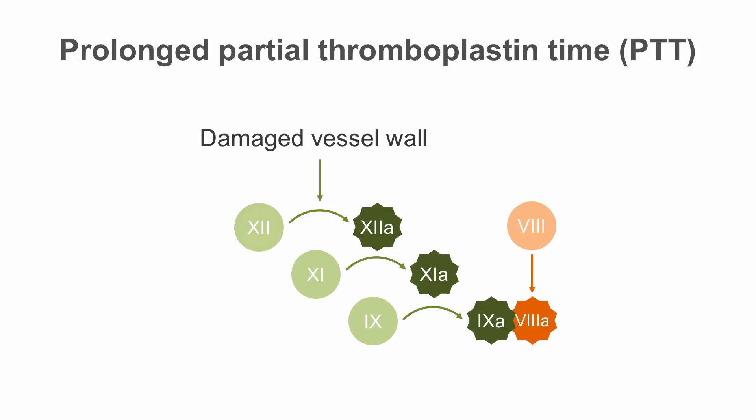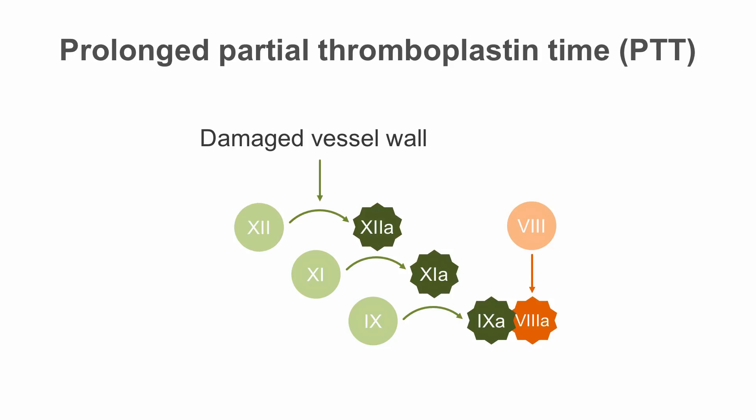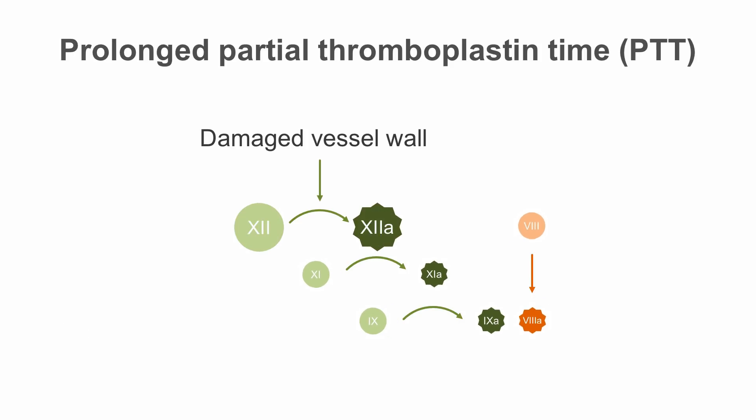However, please note that if an individual has an abnormality of factor 12, the patient does not develop any bleeding. If levels of factor 8, 9, and 11 are reduced and this condition is inherited, these are known as hemophilia A, B, and C respectively.